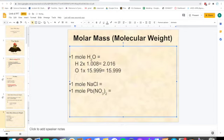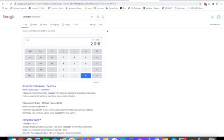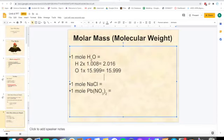Once you have those two numbers, you add them together. So 2.016 plus 15.999 equals 18.015. That's 18.015 grams per mole. That's how you find the molar mass.